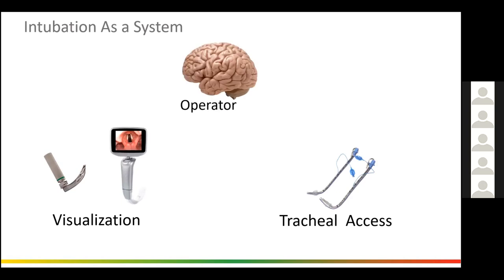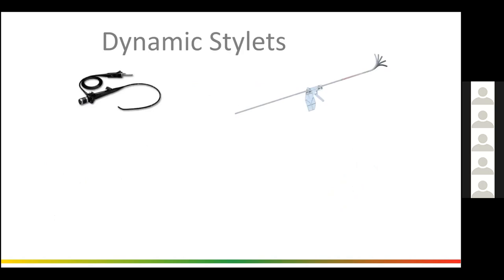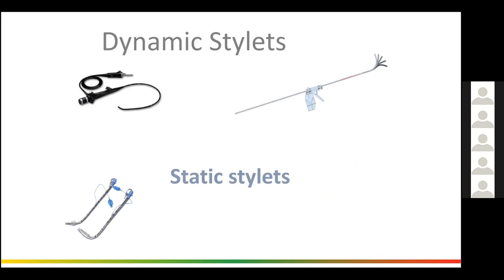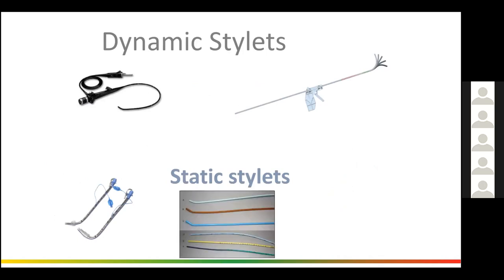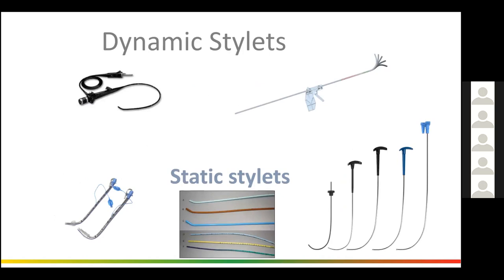We're going to use this model of three components to an intubation system throughout this talk. Dynamic stylets have flexible shafts and controllable dynamic tips — currently that's fiber optic bronchoscopes and the TCI dynamic stylet I built. Static stylets are malleable rods we put into tubes, bougies and introducers, and rigid rods used with video laryngoscopes. The important thing is you cannot change the shape once you start using them — you can bend them, but once you bend, you're committed.